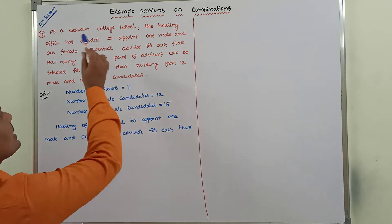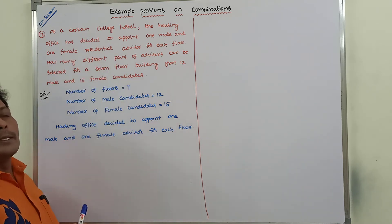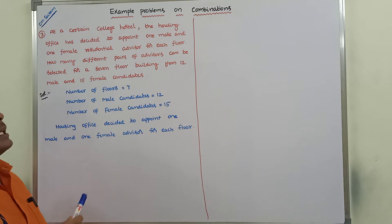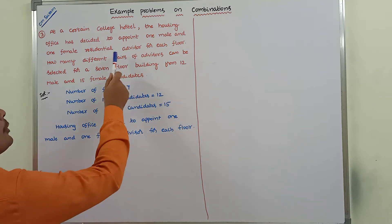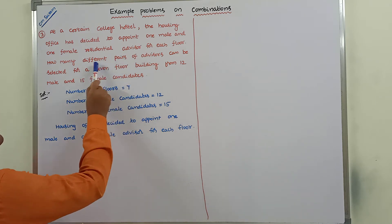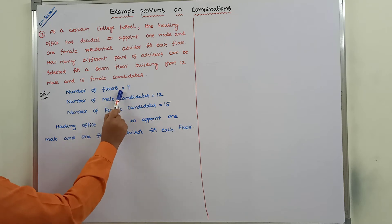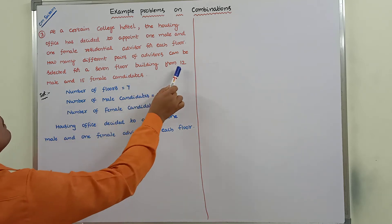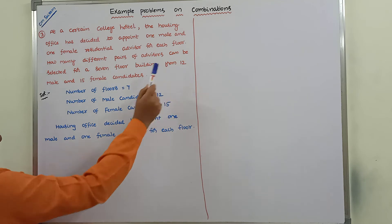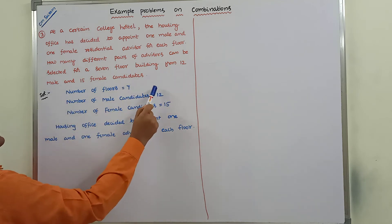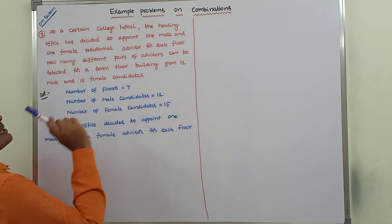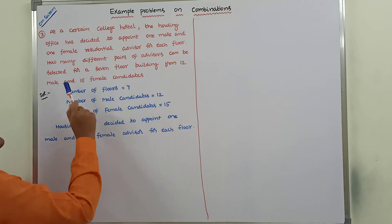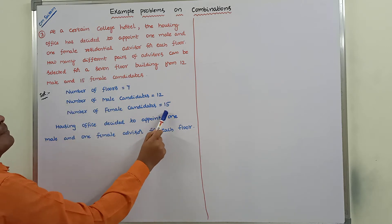So this is the given problem. What is the data given in the problem? Number of floors: 7 floors. How many male candidates? 12 male candidates. How many female candidates? 15 female candidates.